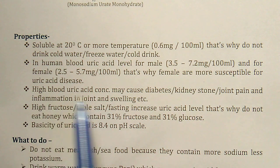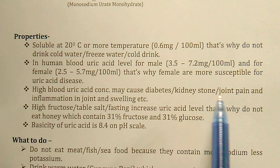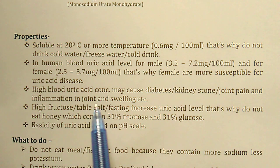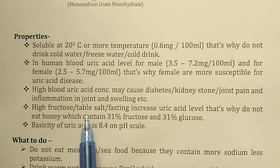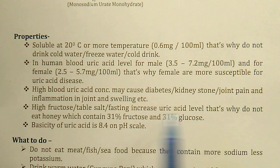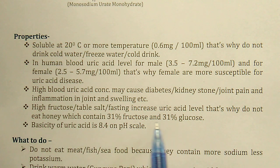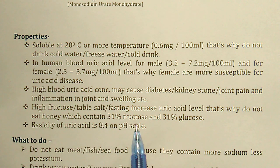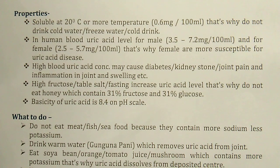High blood uric acid concentration may cause diabetes, kidney stones, joint stiffness, and inflammation. High fructose, table salt, and fasting increase uric acid levels. That is why you should not eat honey, because honey contains 31 percent fructose and 31 percent glucose — and fructose is a facilitating factor for uric acid accumulation in the body.